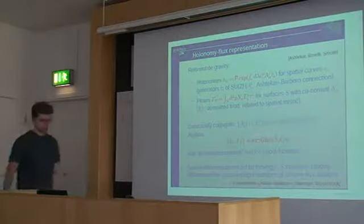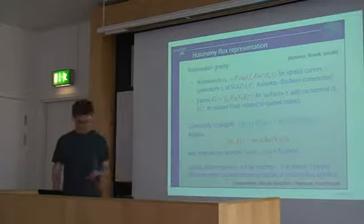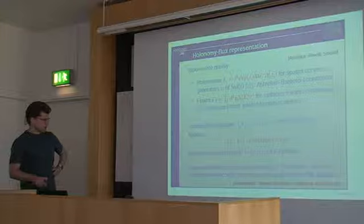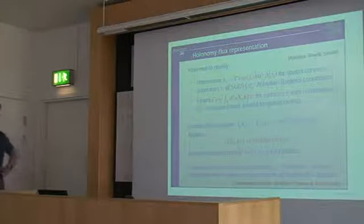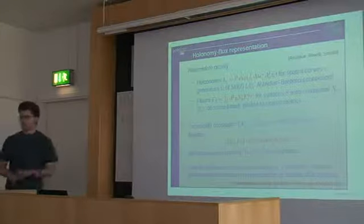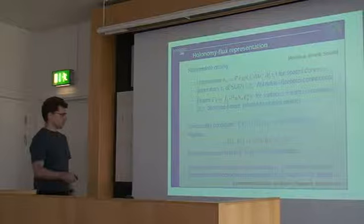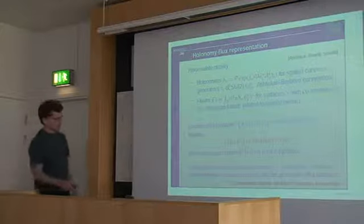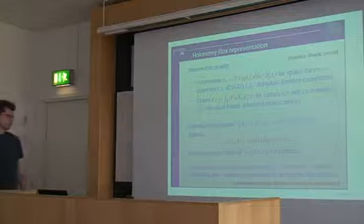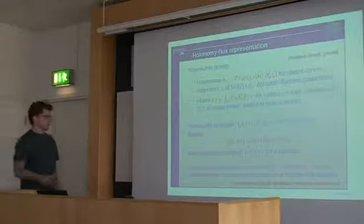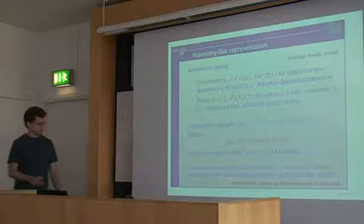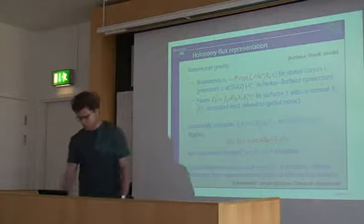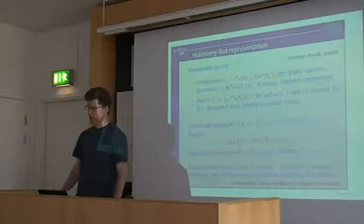Then one can look at possible representations and choose one of them to formulate the quantum theory. The good thing, which was realized only after a few years, is that there's actually a unique representation of that algebra if we also require diffeomorphism covariance. The spatial diffeomorphisms act on the algebra by moving these curves and surfaces around in space. It turns out that if one looks for representations of that algebra that have a unitary action of the diffeomorphism group, there is a unique representation, so there's not even much choice at the kinematical level in setting up the theory.